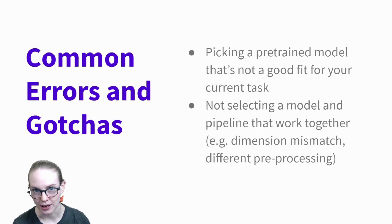So some common errors and gotchas. A really big one is picking a pre-trained model that's not a good fit for your current task. For example, if you have a pre-trained model that was trained on newspaper text, which at least in the United States tends to be very formal—a lot of models have been trained on the Wall Street Journal text, there's a big corpus of it—